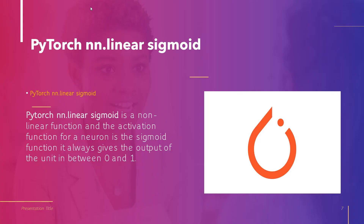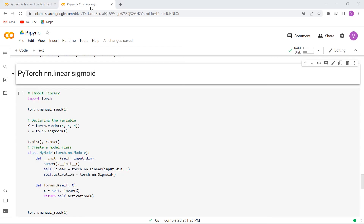Now move forward and discuss about PyTorch nn.Linear Sigmoid. PyTorch nn.Linear Sigmoid is a non-linear function and the activation function for a neuron is the sigmoid function. It always gives the output of the PyTorch nn.Linear unit in between 0 and 1. Now let us understand the concept of PyTorch nn.Linear Sigmoid with the help of an example to clear our doubt.